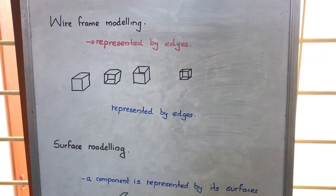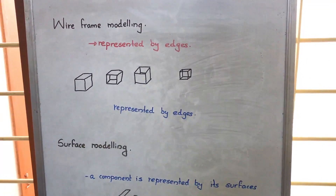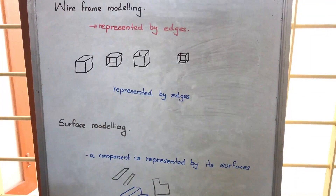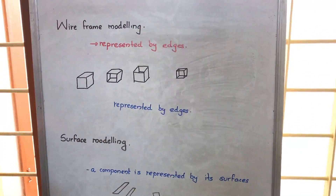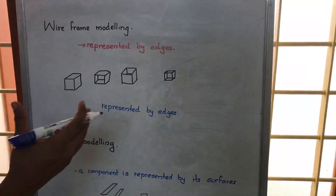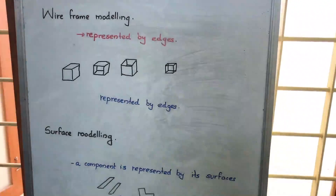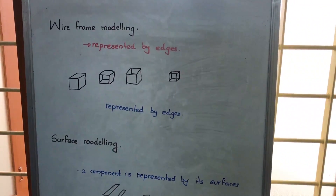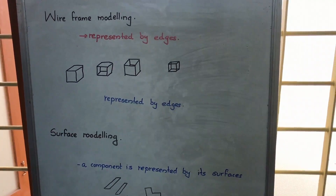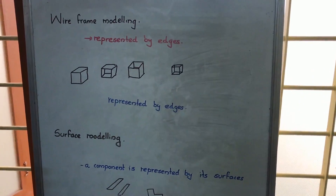We are going to discuss wireframe modeling and surface modeling. In computer-aided designing, there is a part called geometric modeling. Geometric modeling means we are constructing the model of a geometry in the software. We have wireframe modeling and surface modeling while using advanced software.